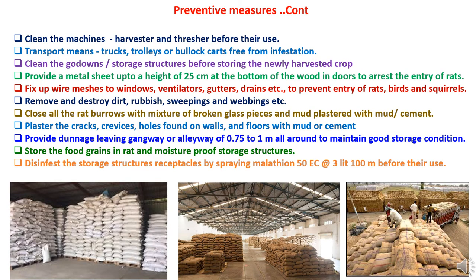Under preventive measures, machines like harvesters, threshers, or processing machines must be cleaned before use to avoid fresh infestations. Trucks, trolleys, bullock carts, and other transport means should be checked and kept free from infestations. Godowns or storage structures must be cleaned before storing newly harvested crops to eliminate various life-stages of pests hiding inside. A metal sheet should be provided up to a height of 25 cm at the bottom of wooden doors to arrest the entry of rats and rodents, and wire mesh should be fixed to windows, ventilators, gutters, and drains.